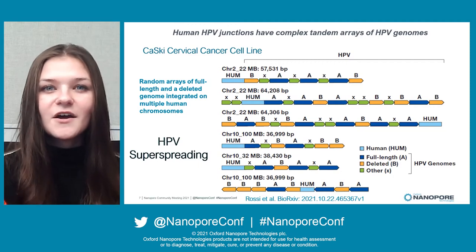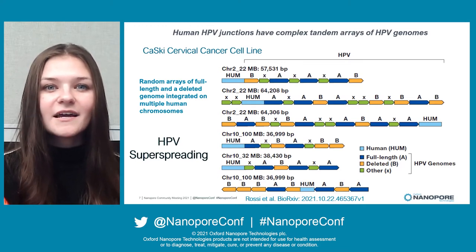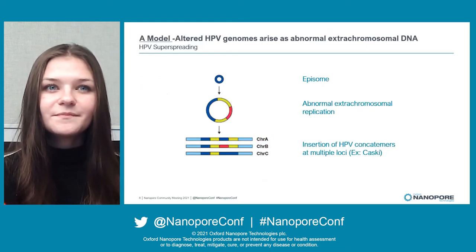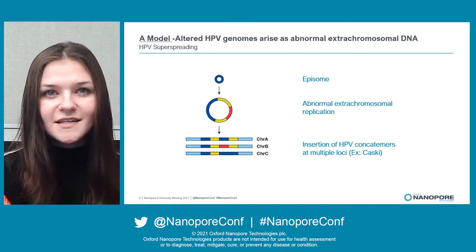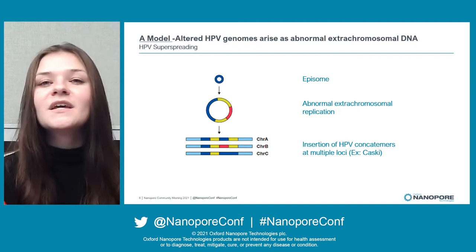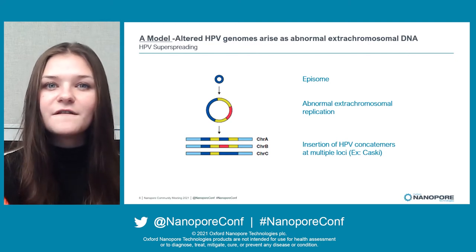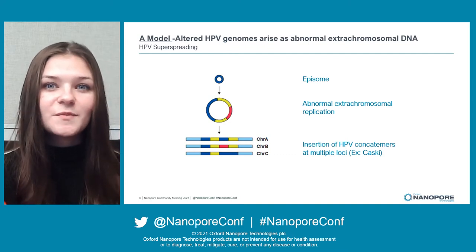From long-read nanopore sequencing, we identified reads with human DNA on one end and HPV genomes on the other. Some of these HPV regions were so long that we were unable to sequence the entire array, and we found some HPV-only reads of up to 160 kilobases internal to these arrays. We propose that the integrated superspreading phenotype — the long tandem repeats of HPV sequences — resulted from an extra-chromosomal episome containing many HPV genomes. Beginning as a single 7.9 kilobase episome, abnormal replication may have resulted in multiple truncated and full-length HPV genomes within the episome, and integration of this episome would result in superspreading within the human genome.